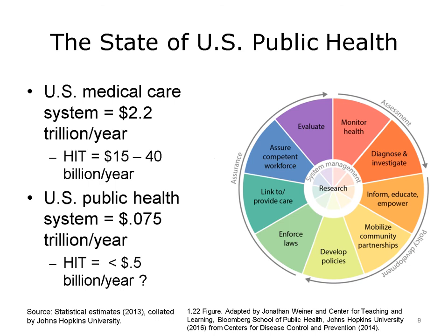For this reason, if one wants to impact the health of populations using public health-oriented approaches, there is no other way to achieve this objective without encompassing the entire health care system, including both medical care and public health. The classic domains of traditional public health services work together in rotation, with research at their core. The subdomains of assessment include monitor health and diagnose and investigate services. Policy development includes the services to inform, educate, and empower, mobilize community partnerships, and develop policies. Assurance services include enforce laws linked to provide care, assure competent workforce, and evaluation.